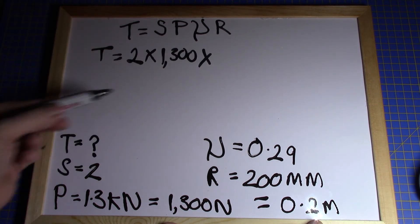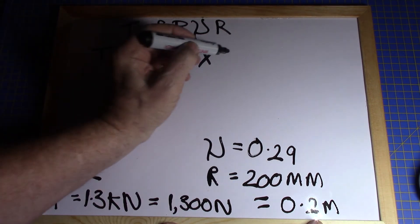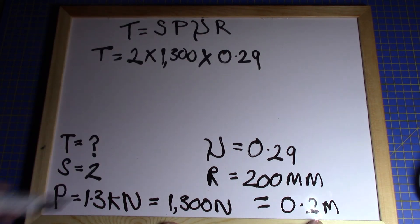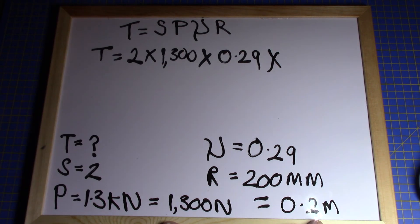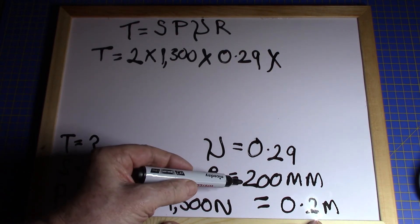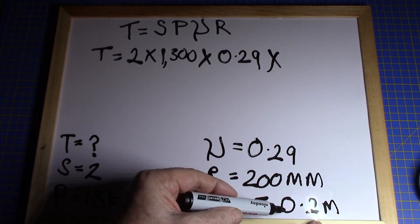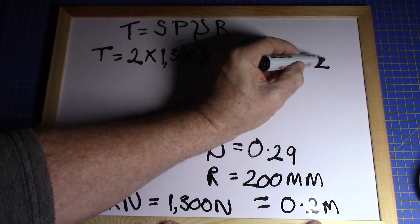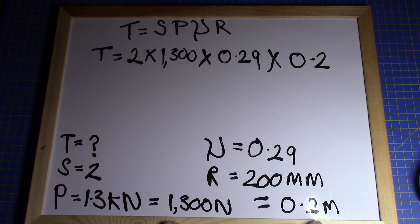Multiplied by μ is 0.29. And multiply by R which is the mean effective radius. We were given 200 millimeters, we know we can't use that, at 0.2. Multiply by 0.2.